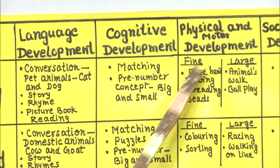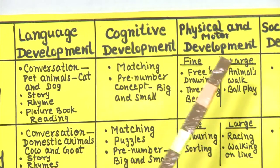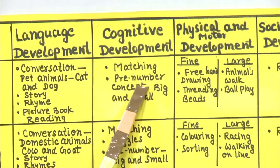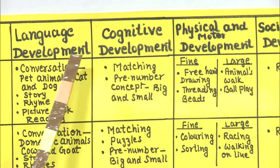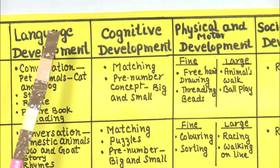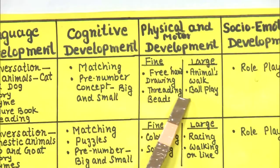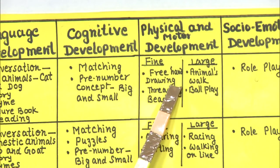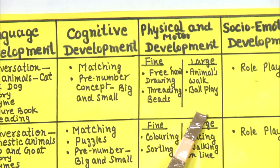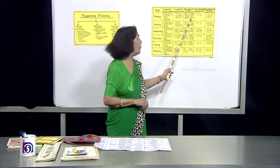For physical and motor development, we cover both fine and large motor. For fine motor, free-hand drawing — you can ask children to draw whatever their favorite animal is. For large motor development on Monday, we will do animals walk and ball play.